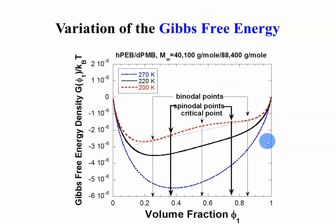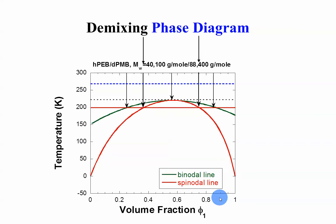This helps us obtain the phase diagram. If we remember these compositions for spinodal points, for the binodal points, for the critical point, and go to the next slide, where instead of Gibbs free energy we have temperature — there you go. These are the spinodal lines, these are the binodal lines measured by light scattering, and this is the critical point. We see the three temperatures: blue, black, and red.